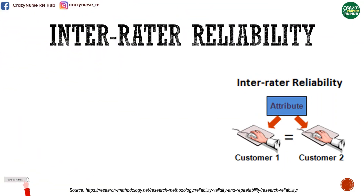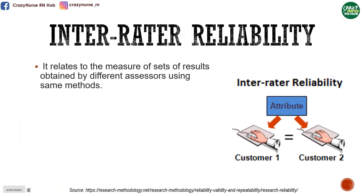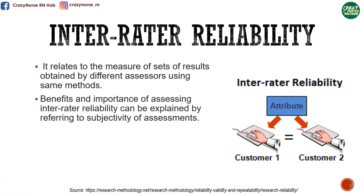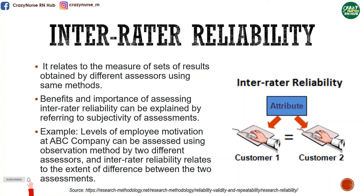Lastly, we have inter-rater reliability. It relates to the measure of sets of results obtained by different assessors using the same methods. Benefits and importance of assessing inter-rater reliability can be explained by referring to subjectivity of assessments. For example, levels of employee motivation at ABC company can be assessed using observation method by two different assessors, and inter-rater reliability relates to the extent of differences between the two assessments.